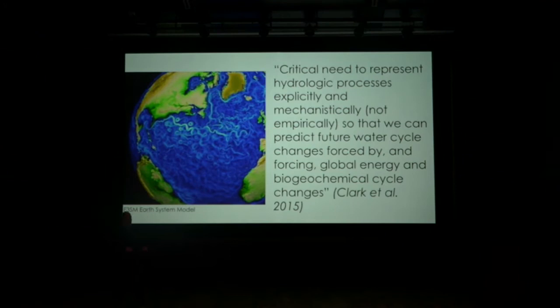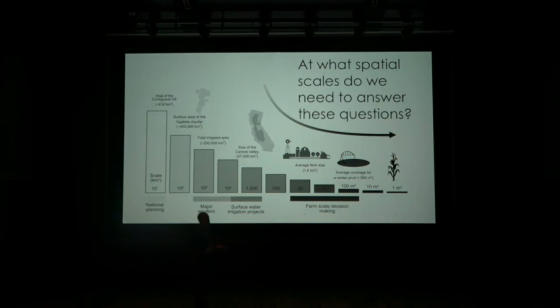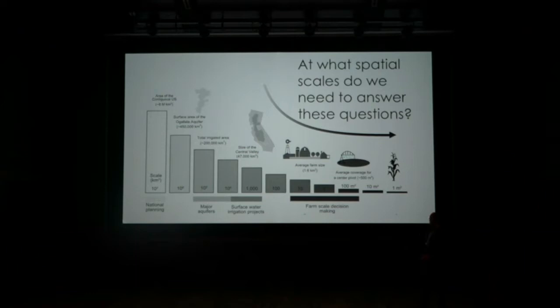We also have a big push to represent our system in a more mechanistic way — a critical need highlighted in the paper Martin Clark led for the 50th anniversary of WRR. If we think about these scales and what tools we might use, going from the national scale all the way down to the individual crop scale, it's really not clear what the right tool for the right scale is.